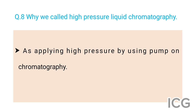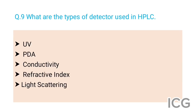The next question is: what are the types of detectors used in HPLC? The answer is UV detector, PDA detector, conductivity detector, refractive index detector, and light scattering detector.